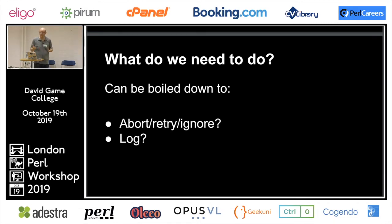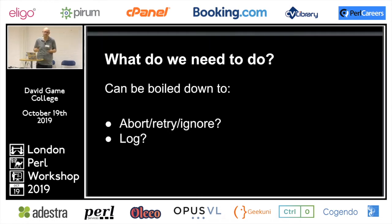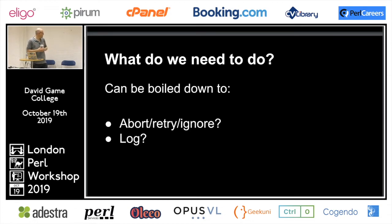What are we actually doing with errors? There's generally a choice to make or some info to log. The choice generally boils down to three things: abort, retry, or ignore. Some errors we don't care about — if it's a cache miss we can just go to the primary source. If it's a network operation it might be worth retrying. Or it may be that we're absolutely broken and have to give up.